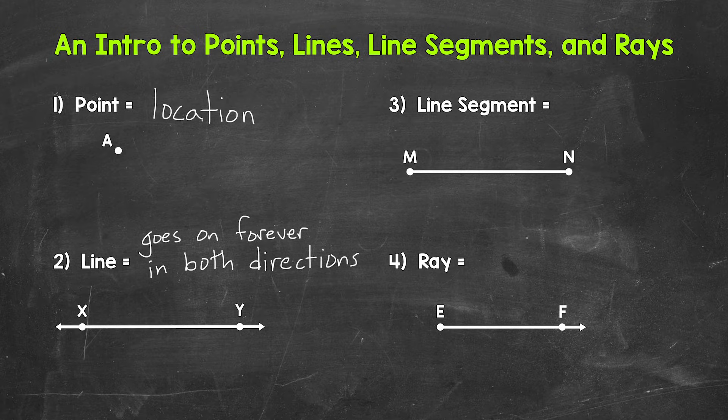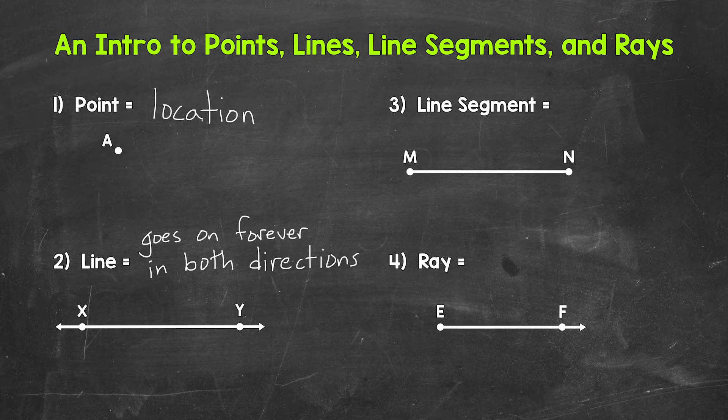For our example, we have line XY. The arrows show that the line extends infinitely in both directions. As far as how to name a line, that's something we will cover in another section.